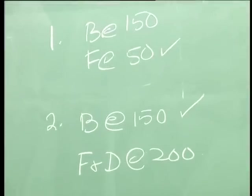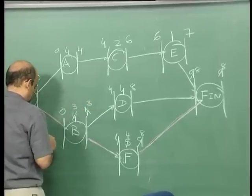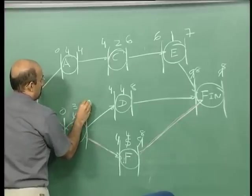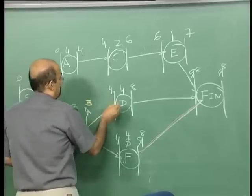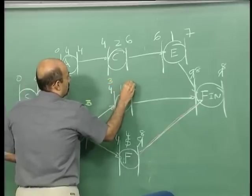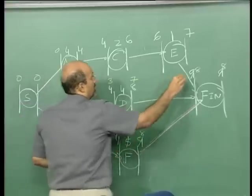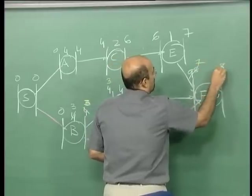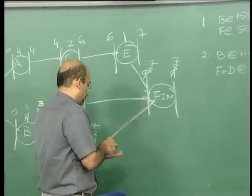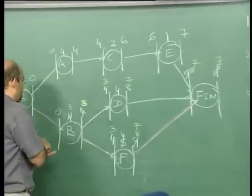I go down — B can go down to 3. This goes to 3. I will use a different color for this step 3. Now this starts at 3, goes to 7. Again 3 goes to 7 and my project duration is at 7. My third step — and now B has been fully crashed.